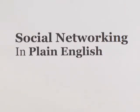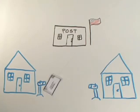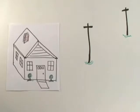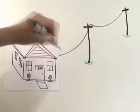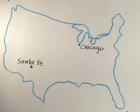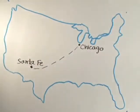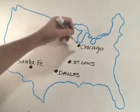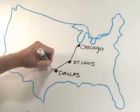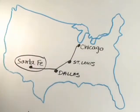Welcome to Social Networking in Plain English. Networks get things done. Whether it's sending a letter or lighting your home, networks make it happen. To get from Chicago to Santa Fe, we need to see the network of roads that will get us there. We see that Chicago is connected to St. Louis, which is connected to Dallas, which is connected to Santa Fe.